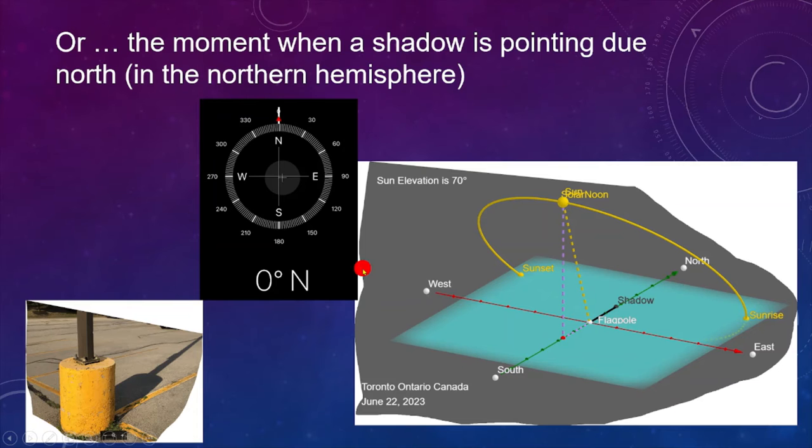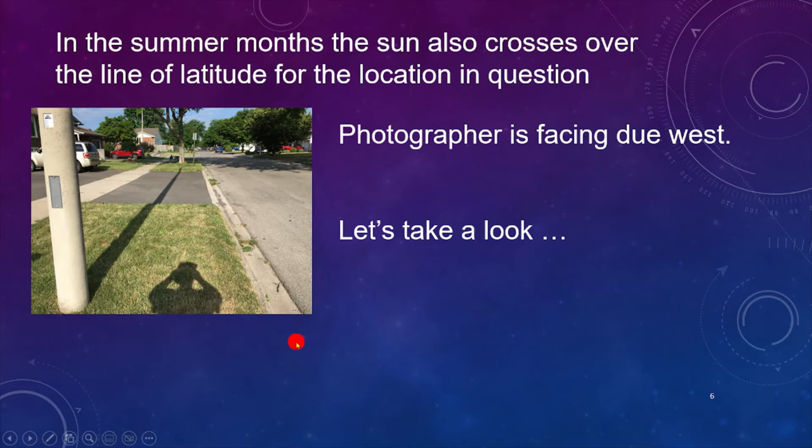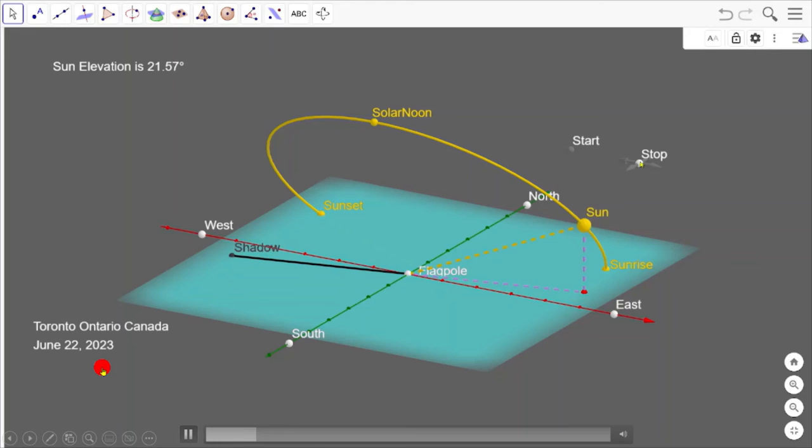In the summer months, the Sun also crosses over the line of latitude for the location in question. As we can see in the photo here, let's take a look.